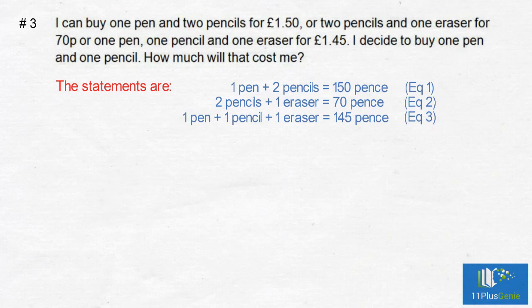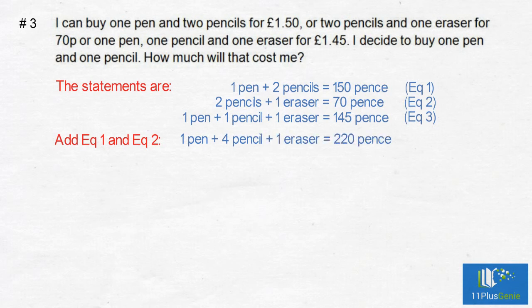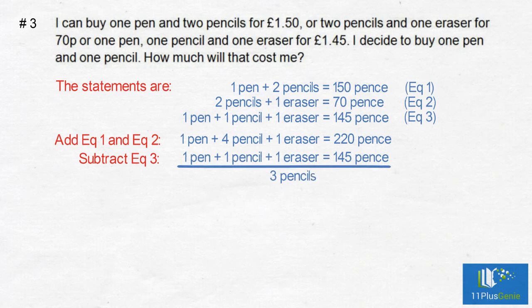Because one of the statements has all three unknowns, we add the first two statements, which gives us one pen plus four pencils plus one eraser equals 220p. We then subtract the third statement, leaving three pencils equals 75p. We divide by three to get one pencil equals 25p.